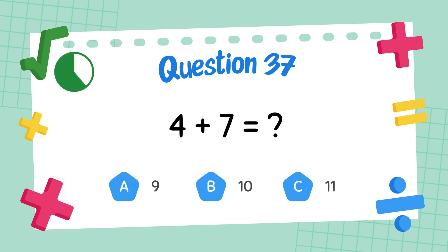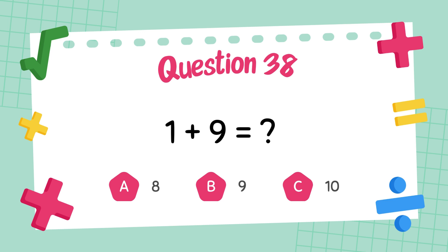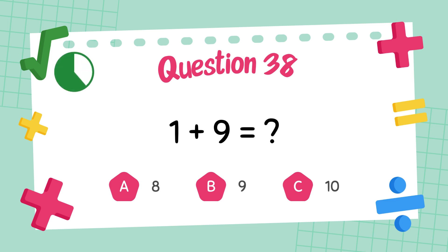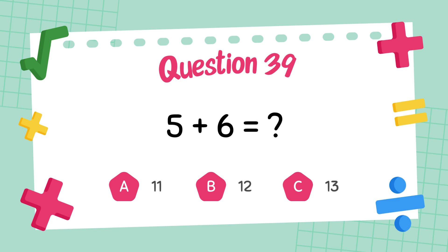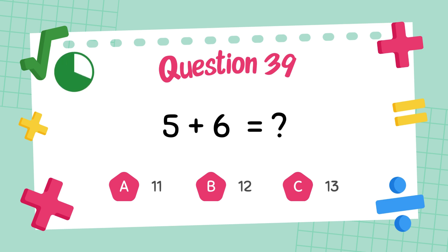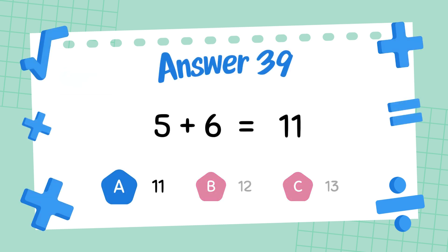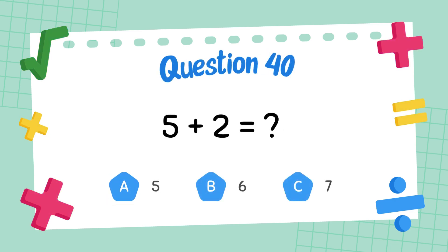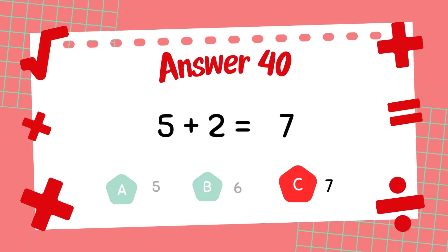What is 4 plus 7? The answer is 11. What is 1 plus 9? What is 5 plus 6? The answer is 11. What is 5 plus 2? The answer is 7.